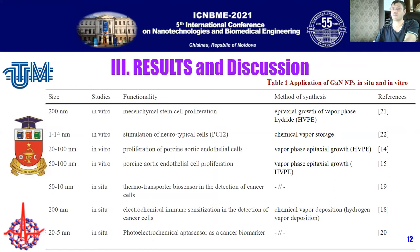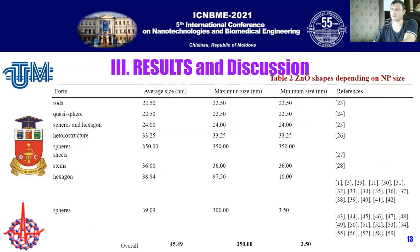In Table 1, we present the application of gallium nanoparticles in situ and in vitro. Studies show that gallium nanoparticles in combination with gold, within in situ applications at sizes between 5 to 200 nm, function as thermotransporter biosensors, electrochemical immunosensors in cancer cells, and photoelectrochemical biosensors as cancer biomarkers. In vitro, gallium nanoparticles at sizes between 1 and 100 nm stimulate the proliferation of specific tissue cells: neuronal, endothelial, and mesenchymal.